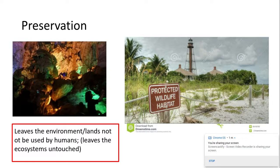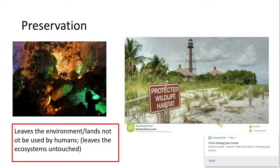Preservation is where you leave an environment alone and the lands are not used by humans at all. It leaves ecosystems completely untouched. For example, this picture on the right hand side here where we've got a protected beach, no human activity beyond those ropes there, where turtles can go and lay their eggs and they won't be touched in any way.